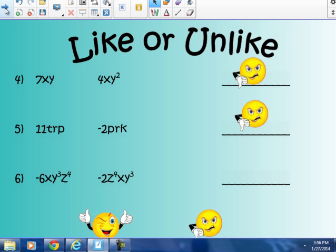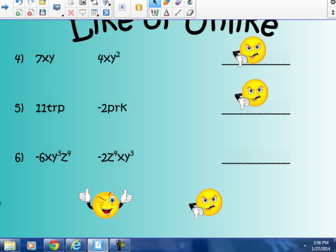Number 6, -6xy³z⁴ and -2z⁴xy³. Well, the -6 and -2, the numerical coefficients, don't matter. Let's look at our variables. x in the first term, x in the second term. y³ in the first term, y³ in the second term. z⁴ in the first term, z⁴ in the second term. Yes, they are in a different order, but they have the same variables with the same power, just written in different orders. The order does not count. It's whether they have the same variable to the same power. So, yes, those are like terms.